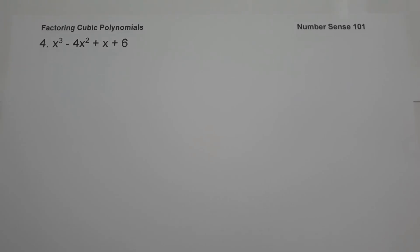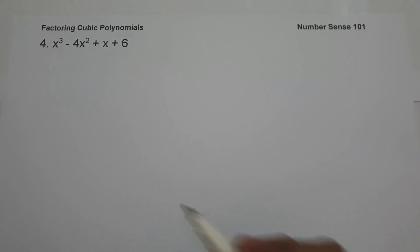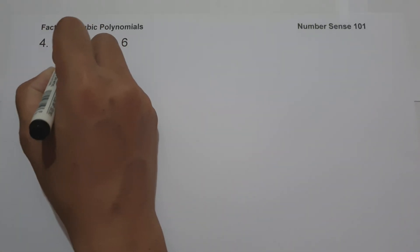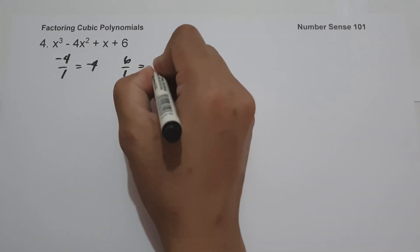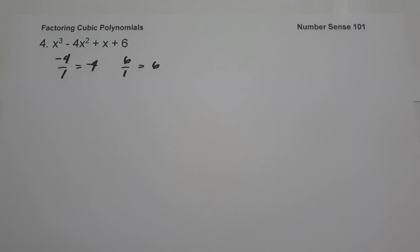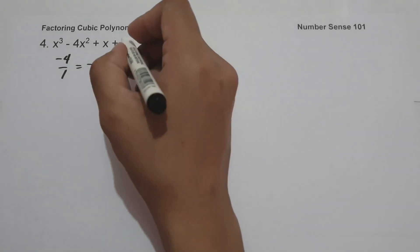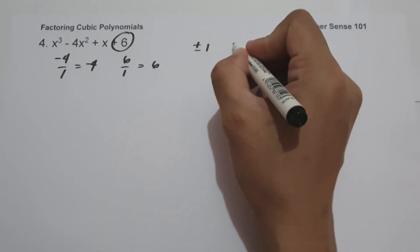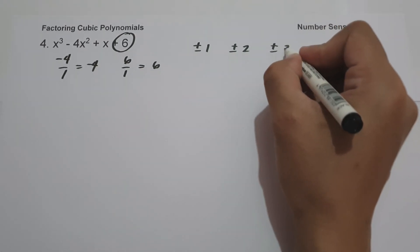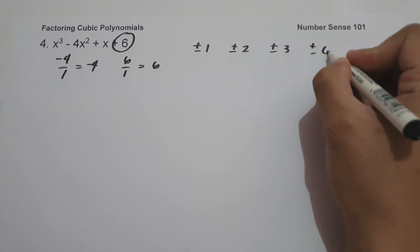On our last example, we have x cubed minus 4x squared plus x plus 6. Let us check if the first two coefficients have the same ratio with the last two coefficients. Negative 4 divided by 1 is negative 4, and 6 divided by 1 is 6. Since we don't have the same ratio, we are going to use synthetic division and consider the factors of 6: positive and negative 1, positive and negative 2, positive and negative 3, and positive and negative 6.